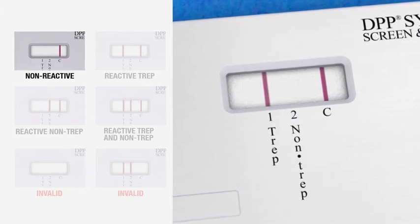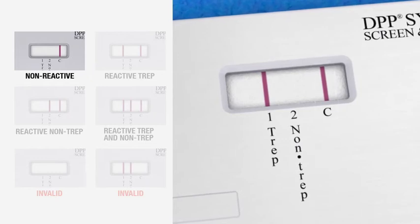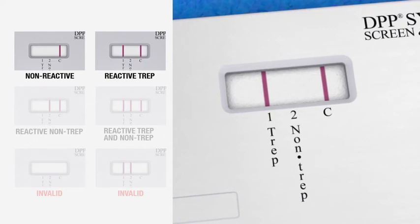If a reddish test line is visible above marking 1 TREP in the test window and a reddish control line has formed above the C marking, then the result is reactive for treponemal antibodies only.